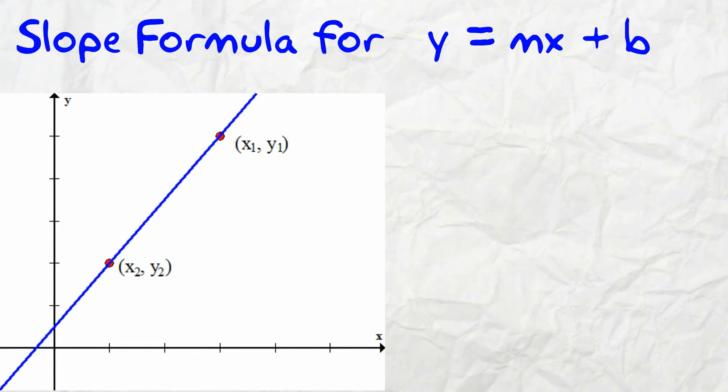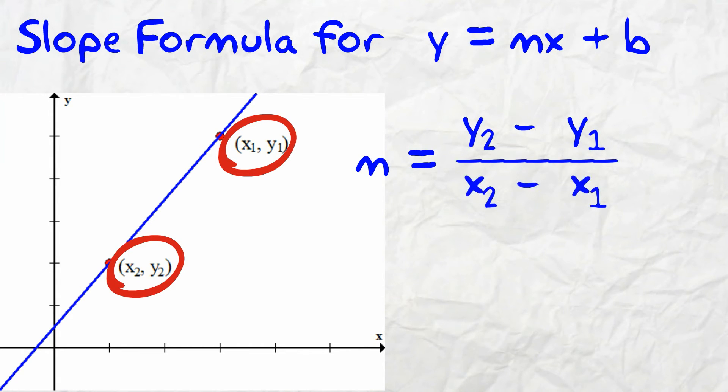The slope formula. Given two points, x1 and y1, and the next point x2, y2, the slope connecting these two points is m equals y2 minus y1 divided by x2 minus x1. Make sure the x and y values correspond to each other.